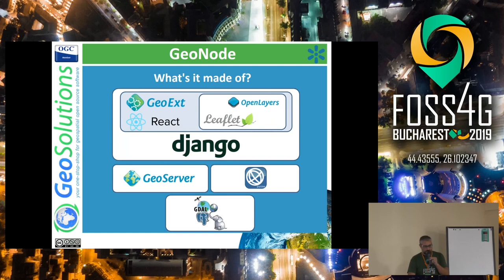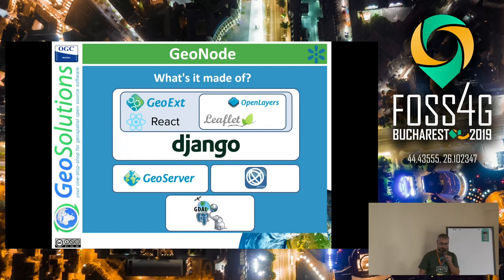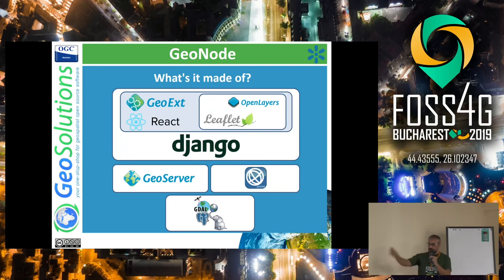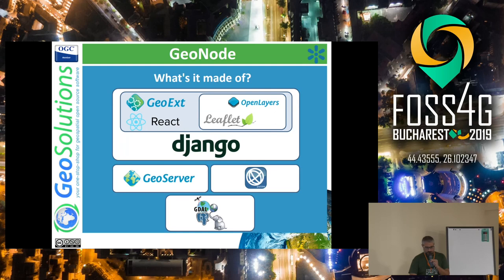The overall architecture, as I said before, is basically a Django application composed of sub-applications. The web clients are based on JavaScript. They use open source projects for GIS navigation, like OpenLayers, Leaflet, and even Cesium if you want. You can choose to use well-known technologies for the front-end like GeoExt, the old one, or React for the new one. Under the hood, you can use GeoServer and databases like PostgreSQL with GIS extensions.